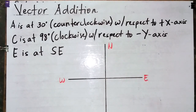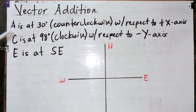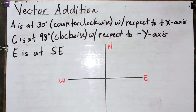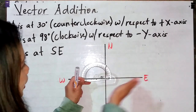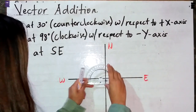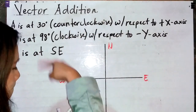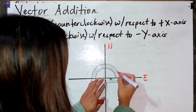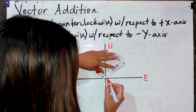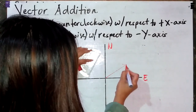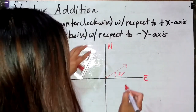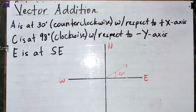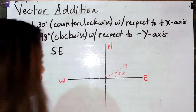Let's have another example to apply direction. Vector A is at 30 degrees counterclockwise with respect to the positive x-axis. Using our protractor aligned at the positive x-axis, we measure 30 degrees counterclockwise, going upward. This is our 30 degrees with respect to the positive x-axis counterclockwise, and the arrow must point in that direction.